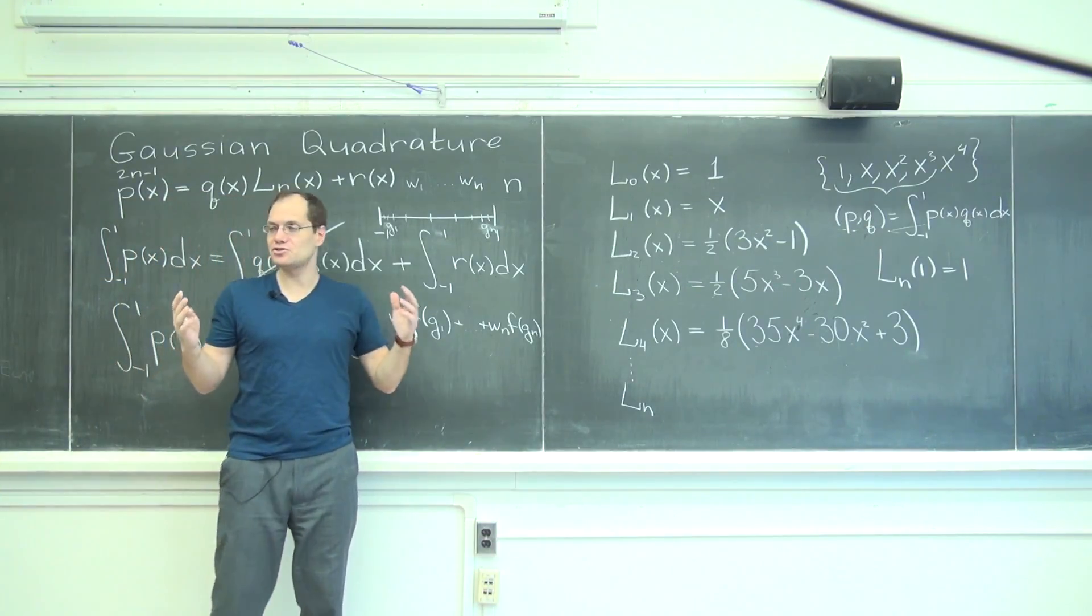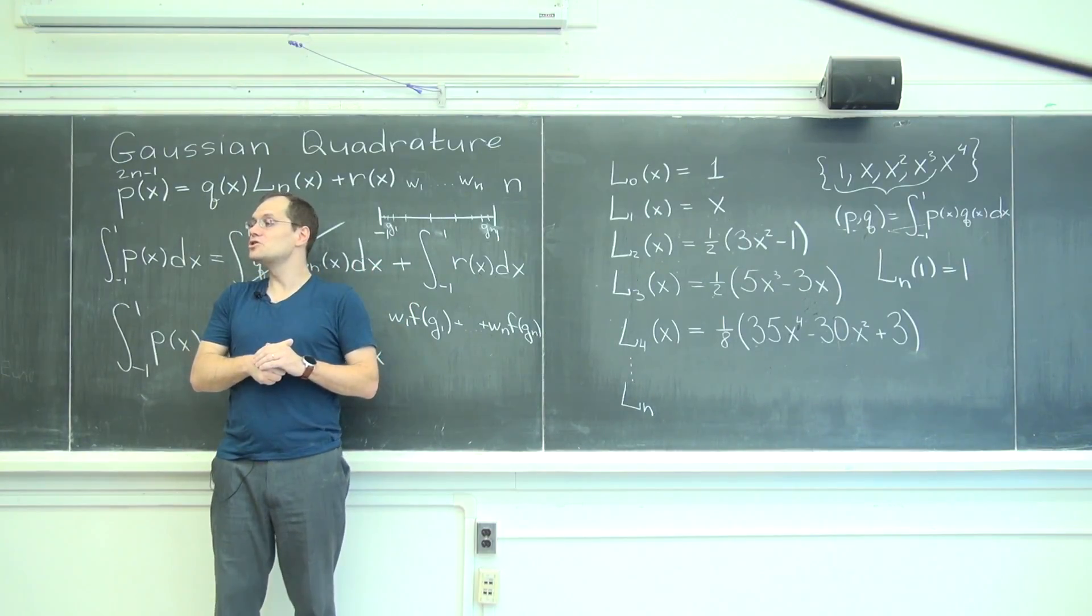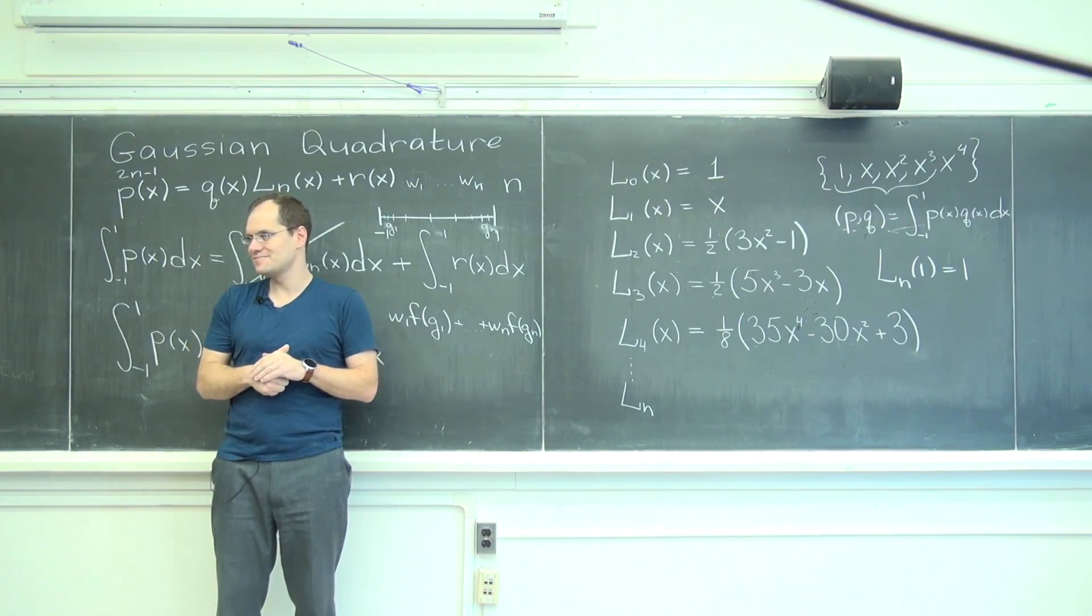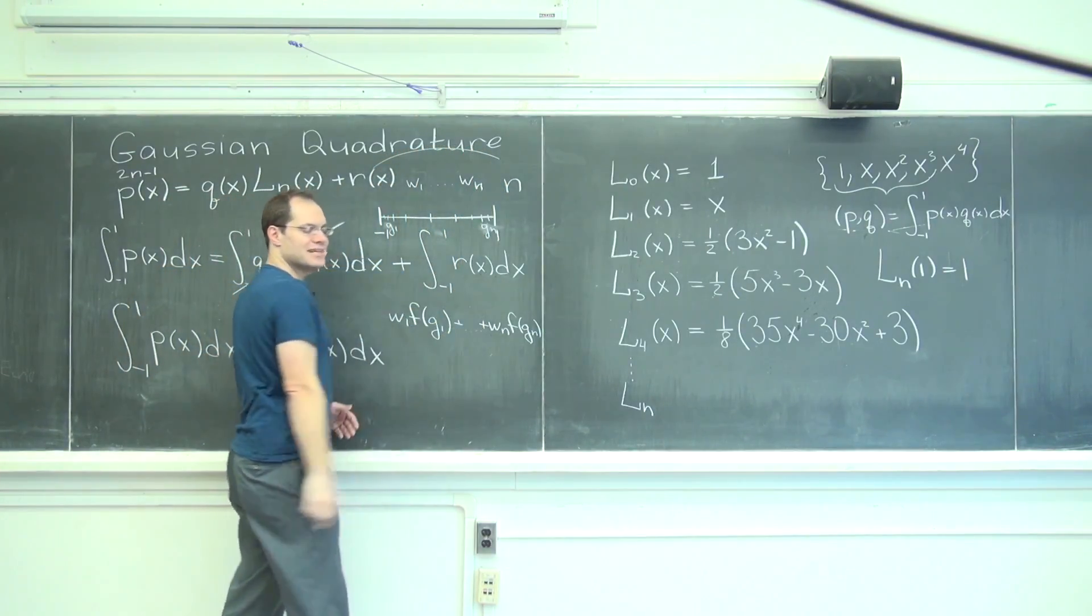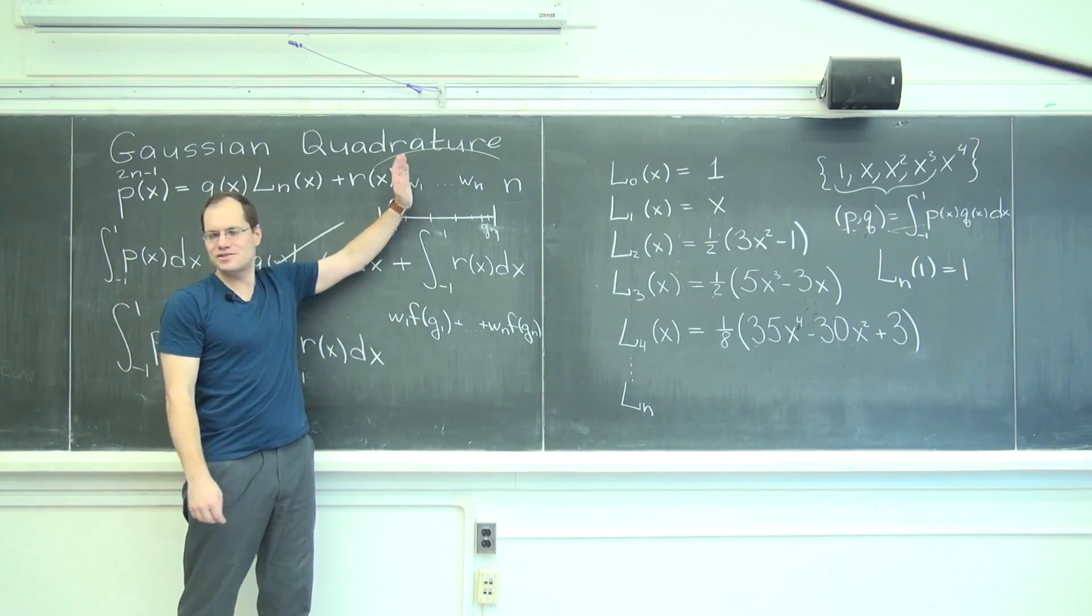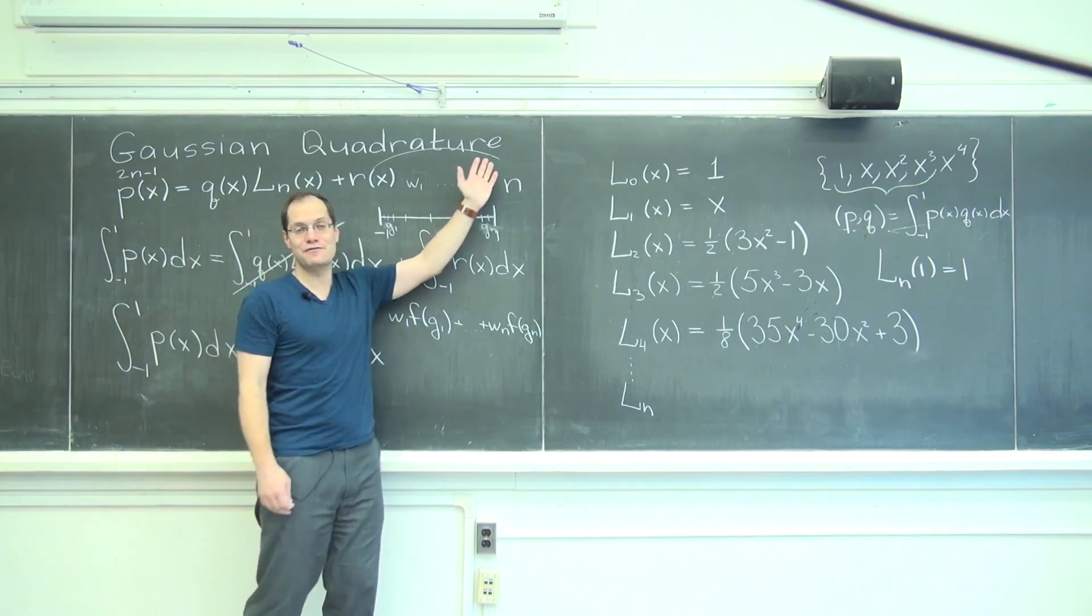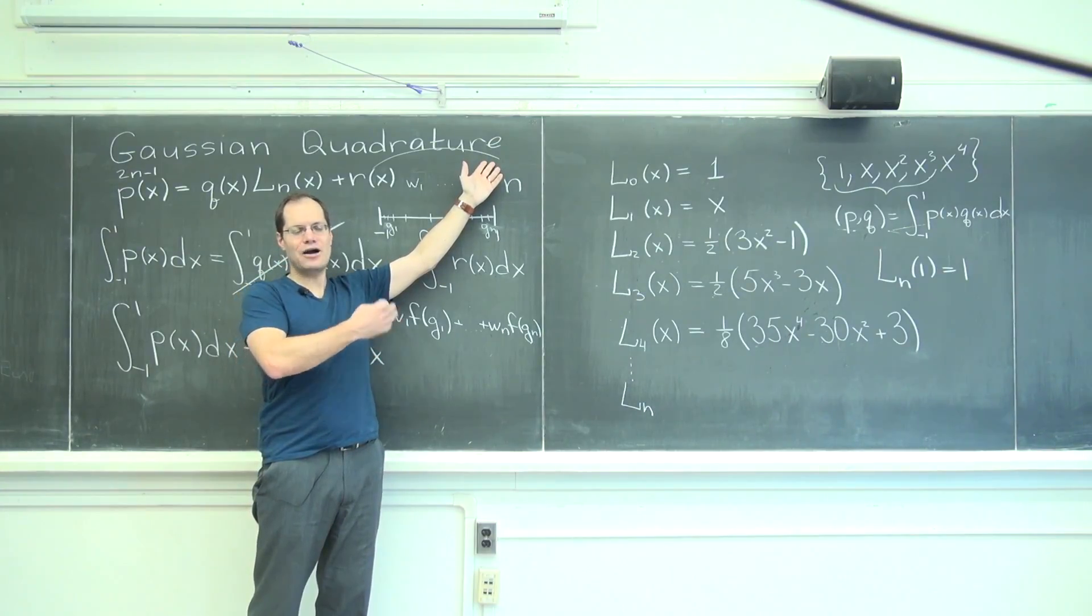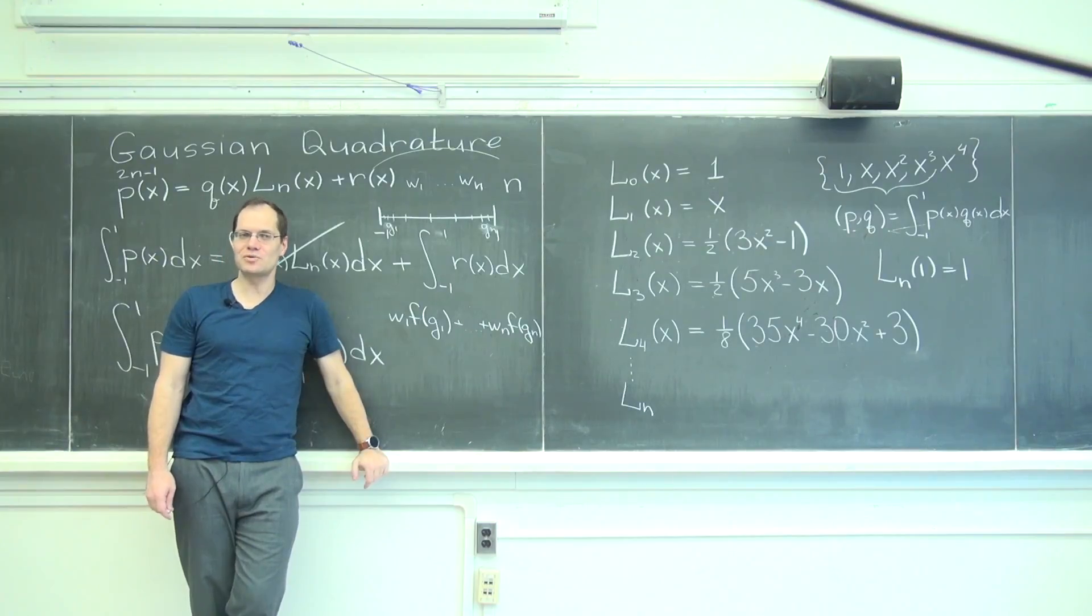So in that example that you saw in the video of Gaussian quadrature, I was using 10 points, which was equivalent to integrating polynomials of degree up to 19 exactly. Now, if you think about that hapless, poor cosine function that looks like this, super smooth, right? I made it sound like a random function, but I actually was careful to choose something super smooth. How well do 19th degree polynomials approximate the cosine? Pretty darn well.